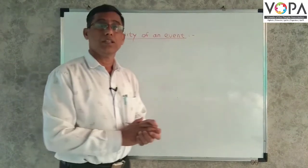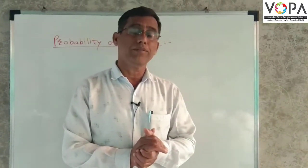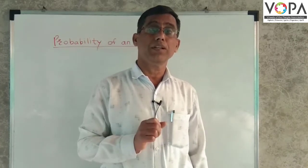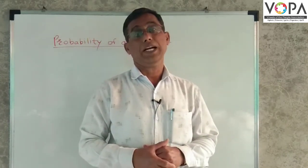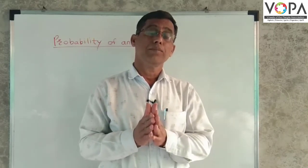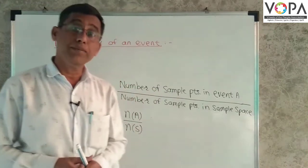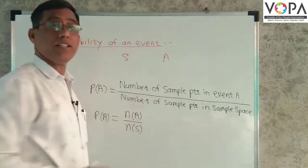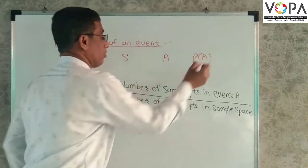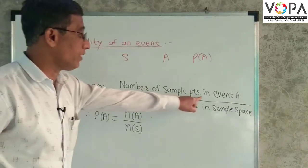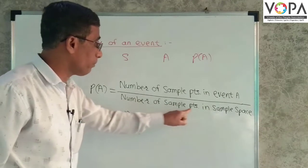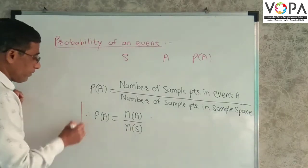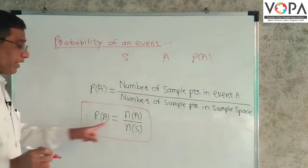Now, we take probability of an event. What is probability of an event? In a mathematical language, when an expected event is expressed in a number, it is called a probability of an event, and it is expressed in percentage or a fraction. For a random experiment, if a sample space is S and expected event is A, then probability of A means P of A. P of A is equal to number of sample points in event A upon number of sample points in sample space S. So, N of A upon N of S. Hence, probability of A is equal to N of A upon N of S.